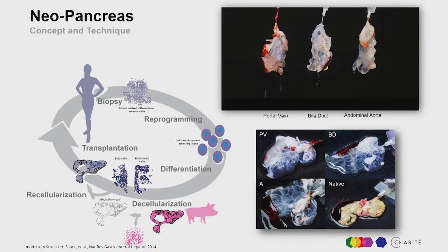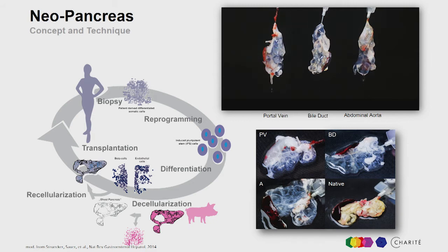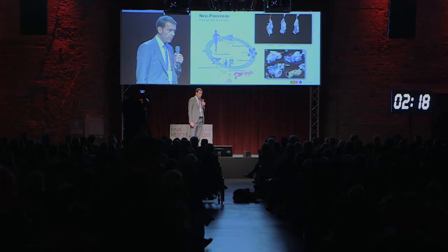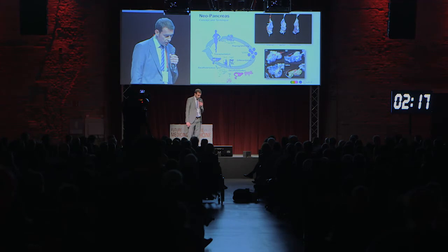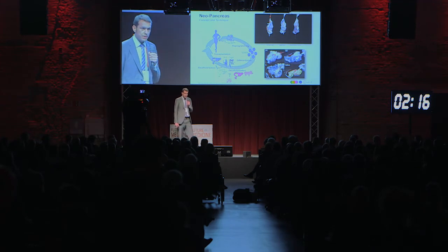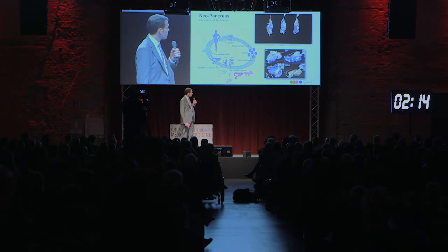As you can see in the video here on the top left, during decellularization of rat pancreata, cells and antigenic material are removed from organs and only the extracellular matrix is conserved. This matrix is less immunogenic and conserves the microanatomy of the organ, and thus can be used for the repopulation with cells from a different origin.